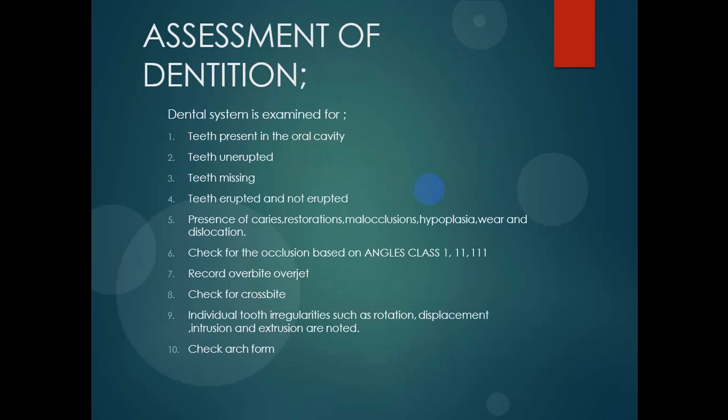Assessment of dentition: the dental system is examined for teeth present in the oral cavity — teeth erupted, missing teeth, teeth not yet erupted. Check for presence of caries, restoration, malocclusions, hypoplasia, wear, and dislocations. Record these properly. Check for occlusion based on Angle Class 1, 2, and 3. Record overjet, overbite, crossbites, and individual tooth irregularities such as rotation, displacement, intrusion, and extrusion. Check arch form — whether it is V-shape, U-shape, square, narrow, or wide.